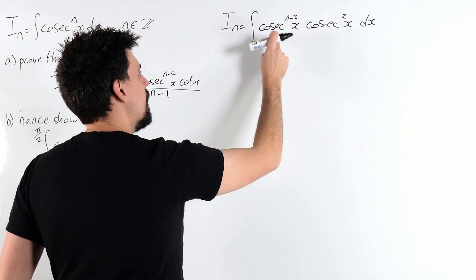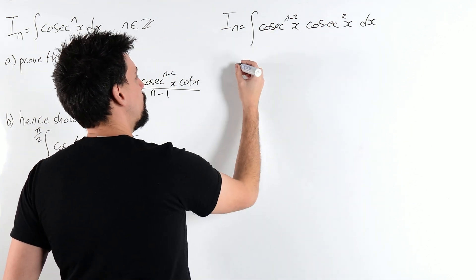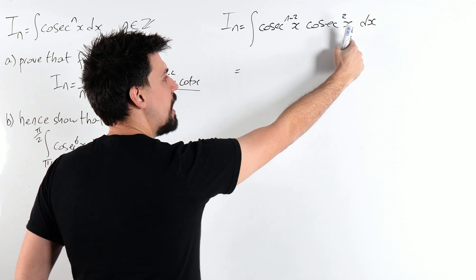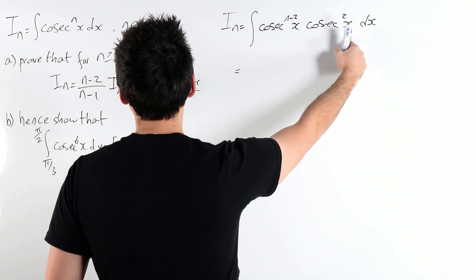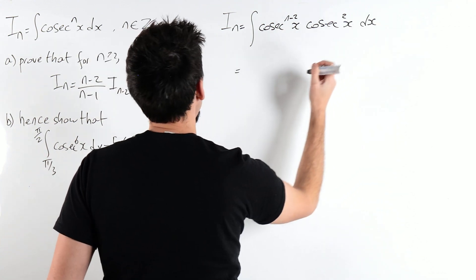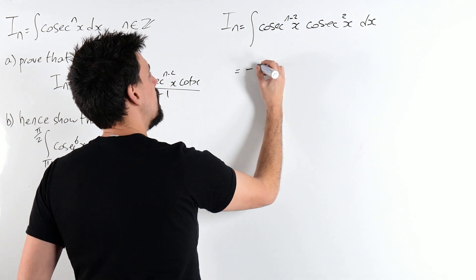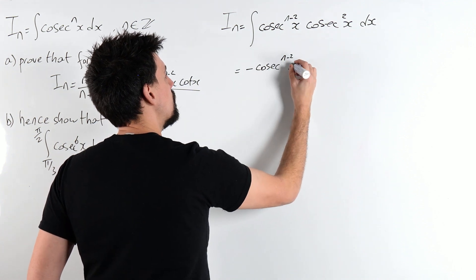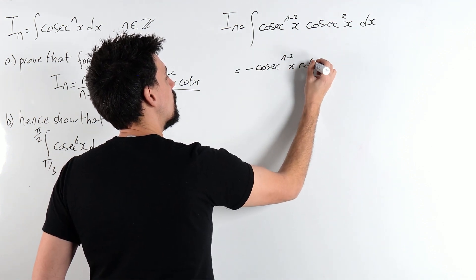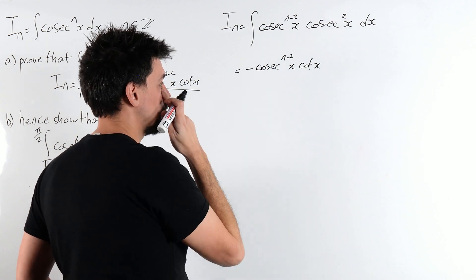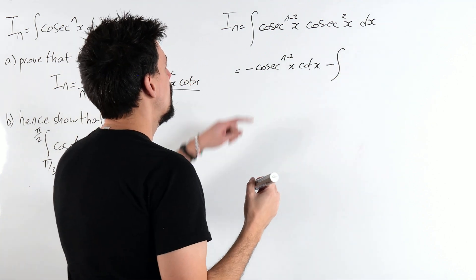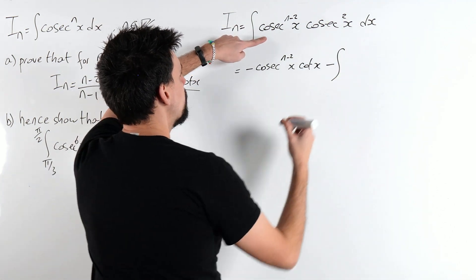Well funnily enough, I'm going to integrate this guy, I'm going to differentiate that guy. So we keep this one, we integrate that one. Now cosec squared integrates to minus cot x.